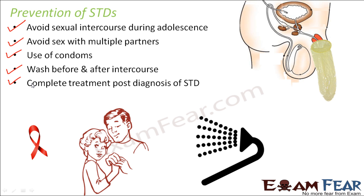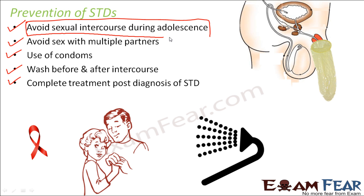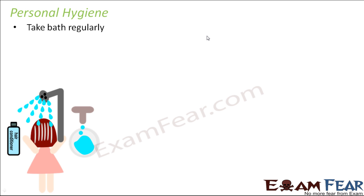Since we are all in our adolescence right now, the first point must be completely remembered always — avoiding sexual intercourse during adolescence is the most important prevention measure for sexually transmitted diseases.